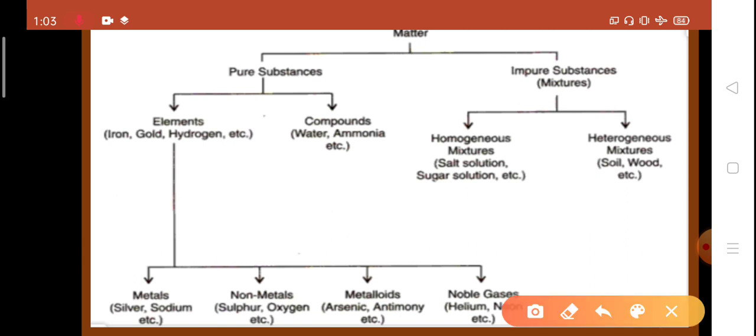Mixtures, they are of two types, homogeneous mixture and heterogeneous mixture. Example of homogeneous mixture are salt solution, sugar solution, etc. And example of heterogeneous mixtures are soil, wood, etc.